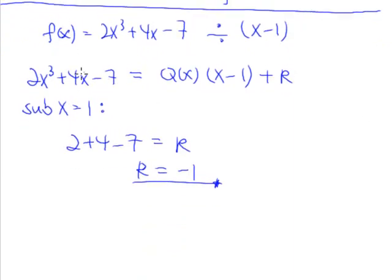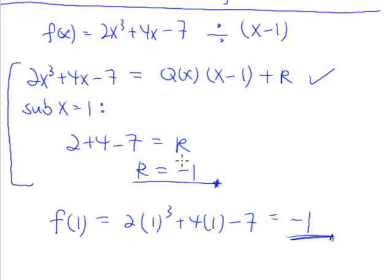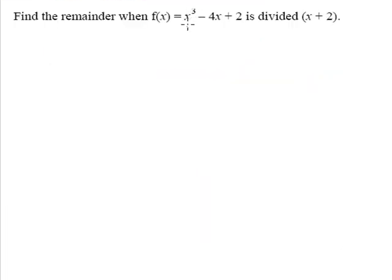So this is what the remainder theorem is all about. It is a theorem that helps us find the remainder in the shortest time possible, without the need to do long division. If we know the remainder theorem: when f(x) is divided by (x − 1), the remainder is simply found by substituting x = 1. So f(1) gives us 2(1)³ + 4(1) − 7 = negative 1. When we substitute x = 1, we get rid of the quotient and divisor altogether and are left only with the remainder. You don't have to show this working — just substitute x = 1 directly into the function.